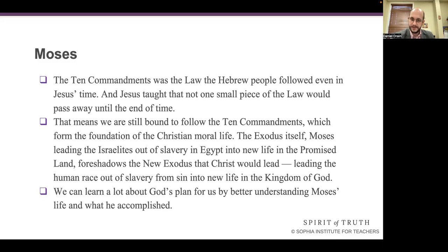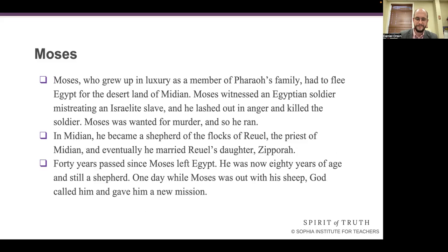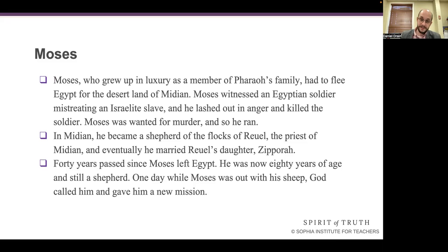We have to skip a little bit of Moses' birth story. Feel free to read those things on pages 148 and 150. But I want to jump ahead to the episode of the Burning Bush. Moses, who grew up in luxury as a member of Pharaoh's family, had to flee Egypt for the desert land of Midian after he witnessed an Egyptian soldier mistreating an Israelite slave and killed the soldier. In Midian, he became a shepherd of the flocks of Jethro, the priest of Midian, and eventually married his daughter Zipporah. Forty years passed since Moses left Egypt, and he's now 80 years of age. One day, while Moses was out with his sheep, God called him and gave him a new mission.